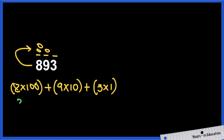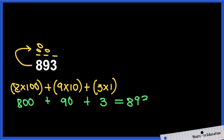Let's multiply: 8 times 100 is 800, plus 9 times 10 is 90, plus 3 times 1 is 3. So the number is 893.